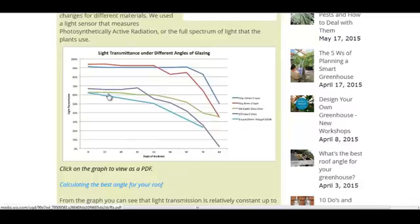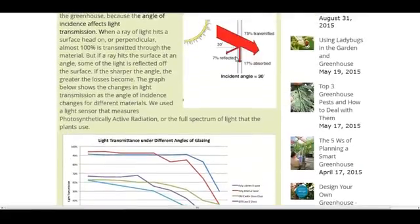But as you can see, this is a chart showing angle of incidence, meaning the angle at which the sun hits it. Here's the angle of incidence, it's 30 degrees right here, because that's the angle at which the sun hits the surface.